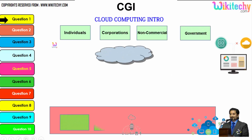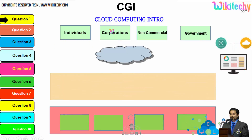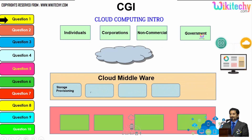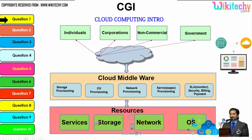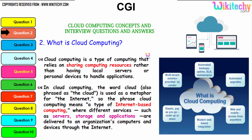There are different types of users: individuals, corporations, non-commercial people, and government. From any of these users, they are able to access services, storage, networks, or operating systems via cloud middlewares. These are specialized software provided by the cloud service provider to allow end users to access resources. This is how the cloud computing architecture works.